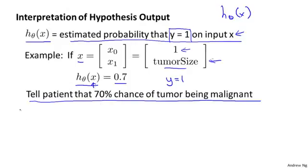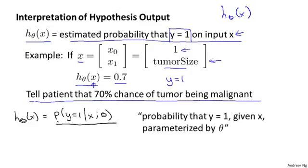To write this out more formally in math, I'm going to interpret my hypothesis output as p of y equals 1, given x, parametrized by theta. This is the probability that y is equal to 1 given that my patient has features x — for instance, a particular tumor size represented by my features x. This probability is parameterized by theta, so I'm counting on my hypothesis to give me estimates of the probability that y is equal to 1.